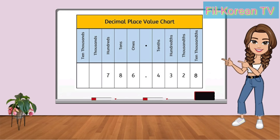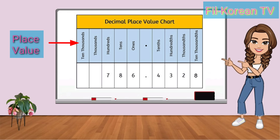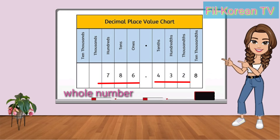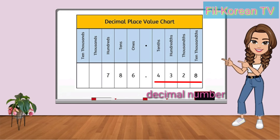Now let us examine the decimal place value chart. The given number is 786 and 4,328 ten-thousandths. The place names ones, tens, hundreds, thousands, ten-thousands, and tenths, hundredths, thousandths, ten-thousandths are the place values. The decimal point separates the whole number on the left from the decimal number on the right.